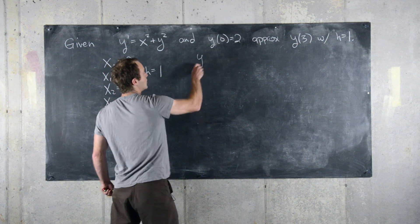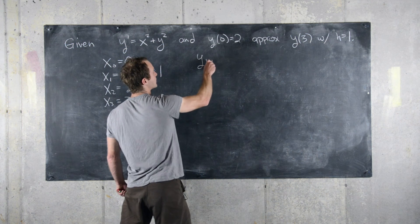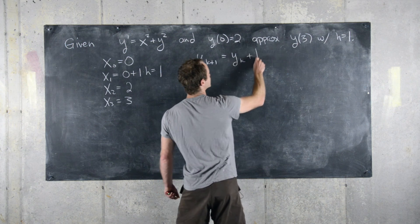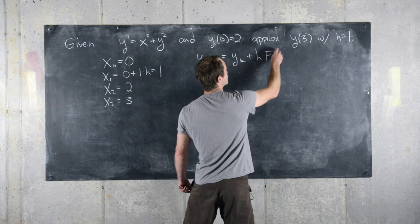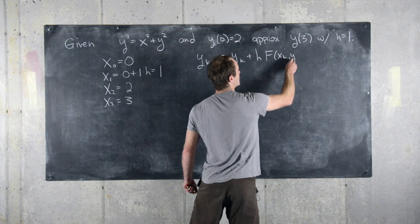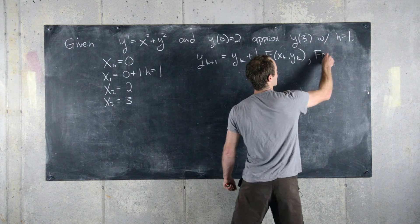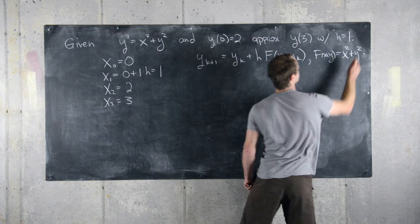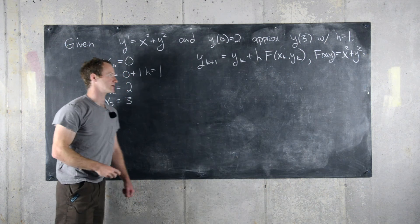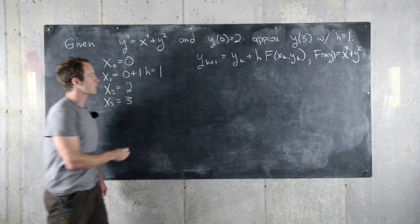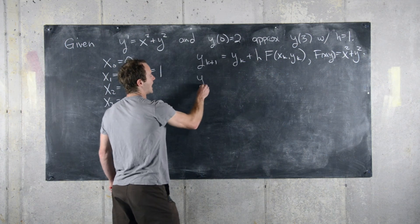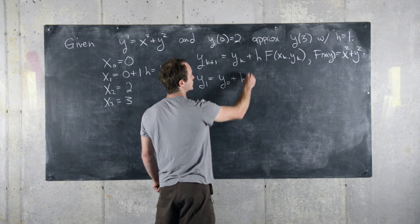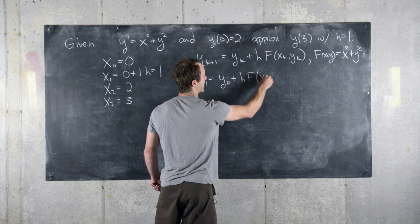And we also know that y of k plus one will be given by y of k plus step size h times f of xk yk, where f of xy is given by x squared plus y squared—that's given by our differential equation. So in other words, we have y of one will be equal to y of zero plus h, f evaluated at x zero, y zero.